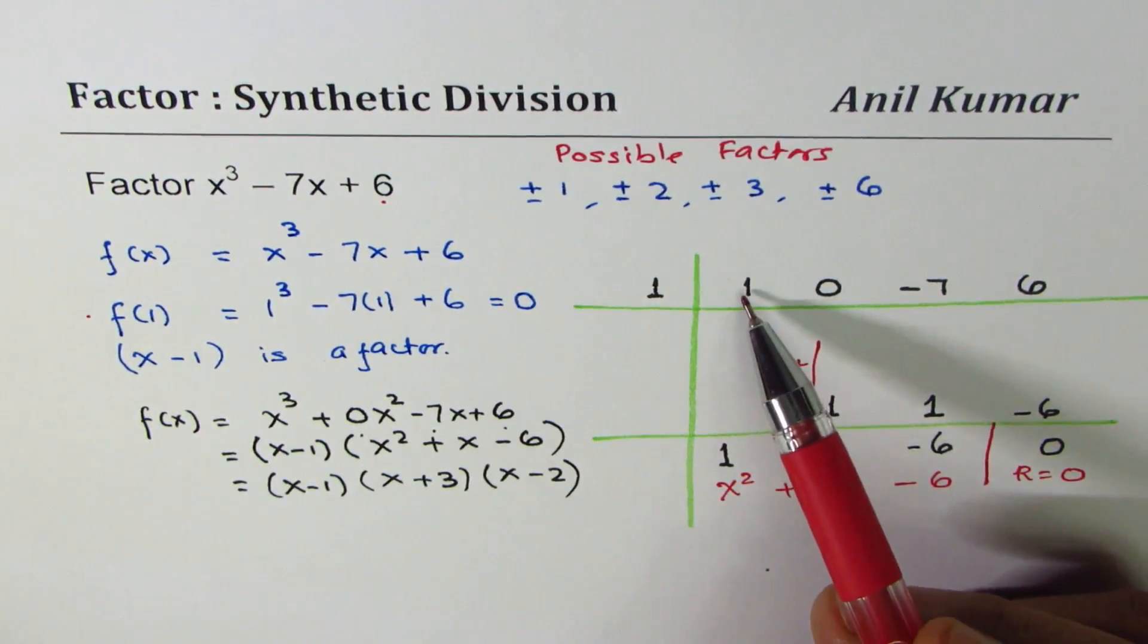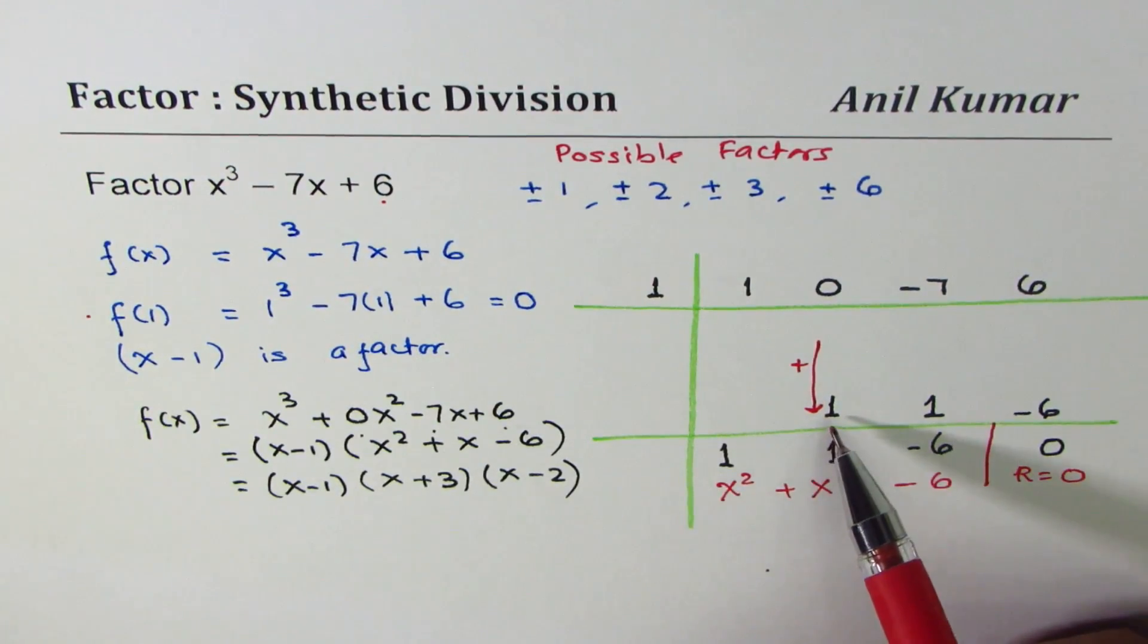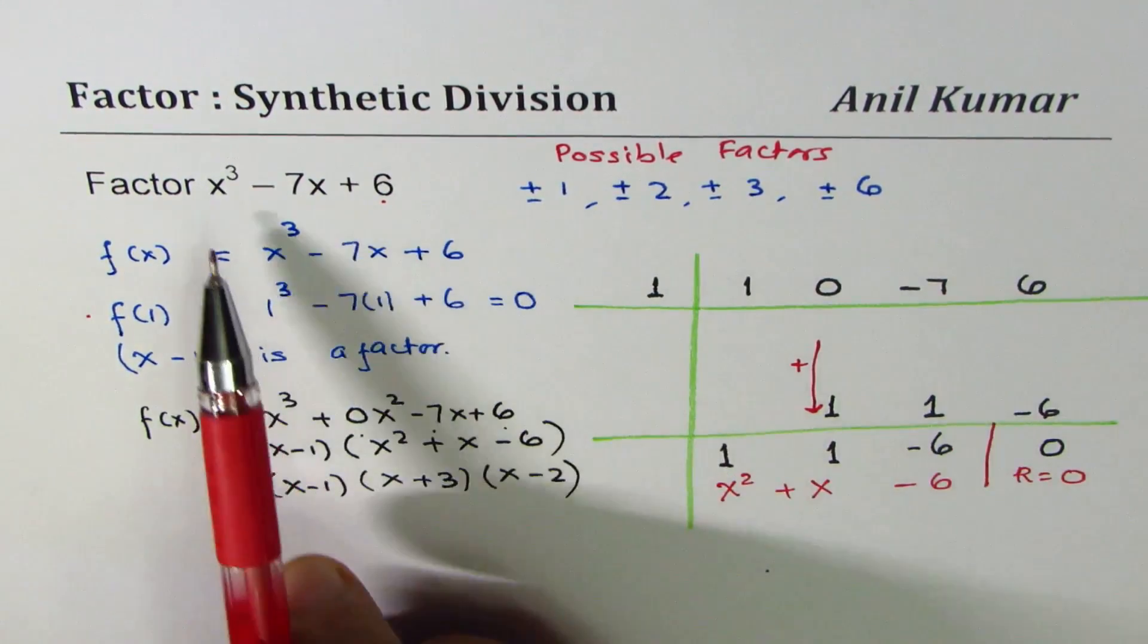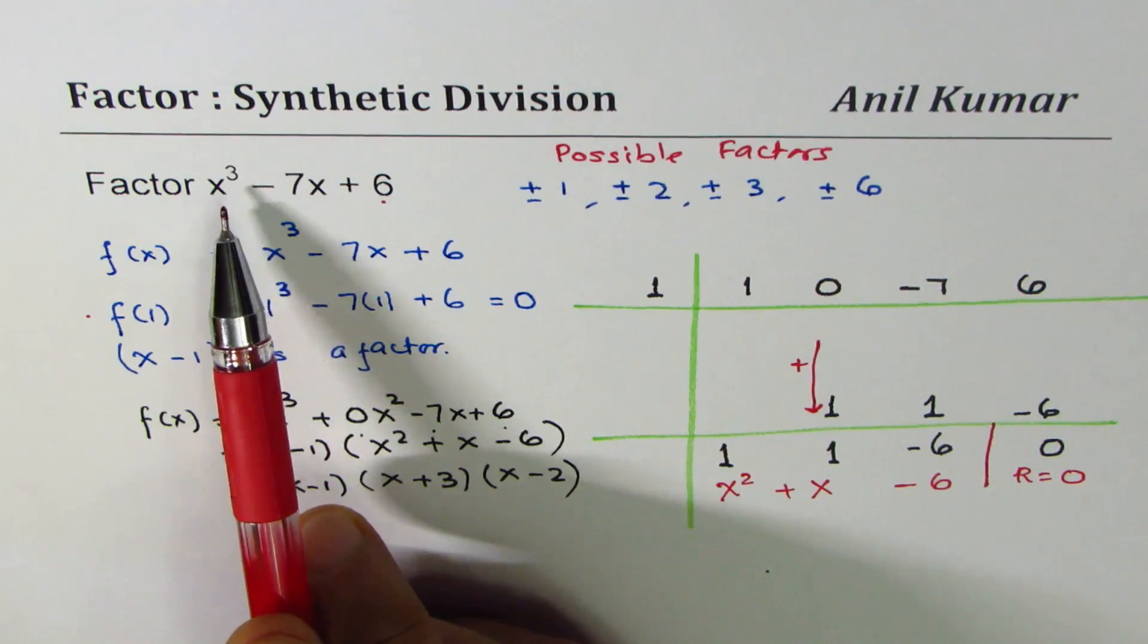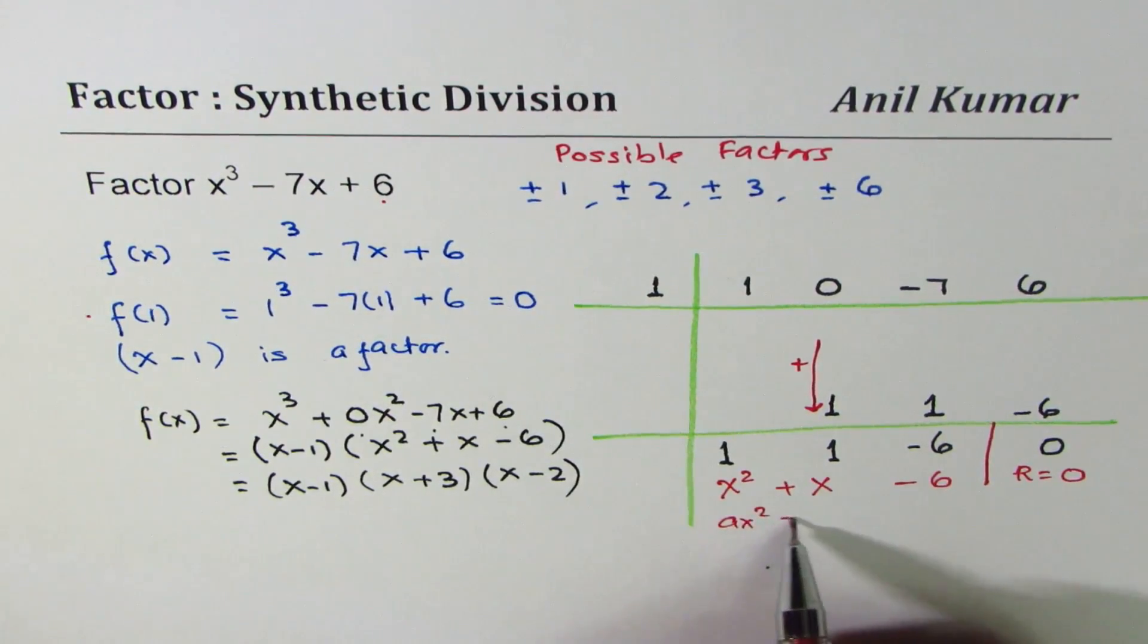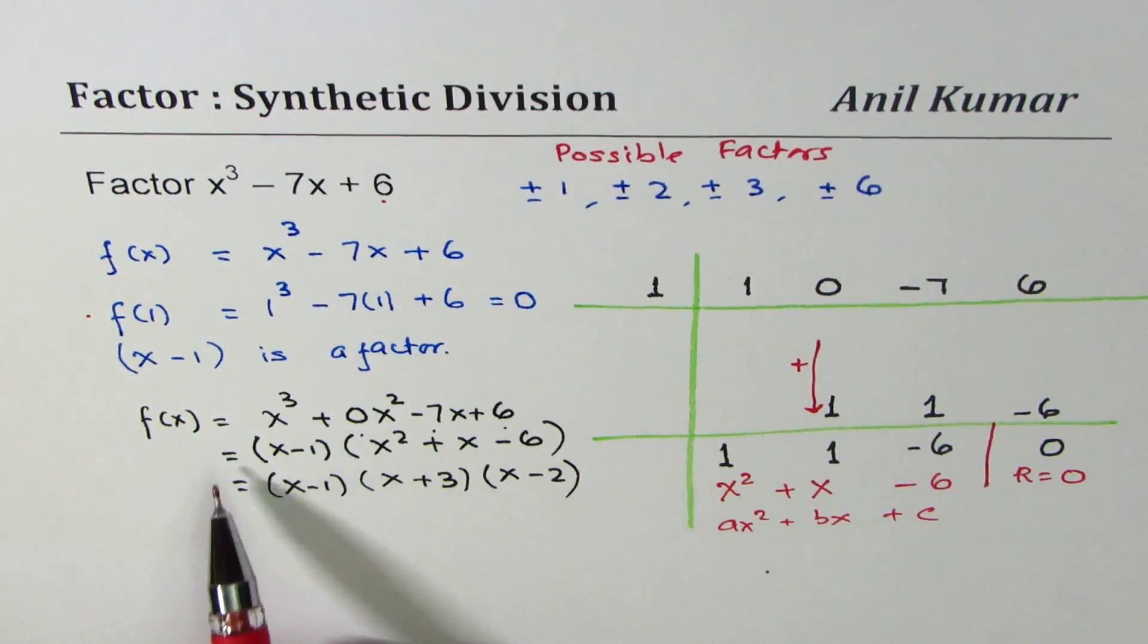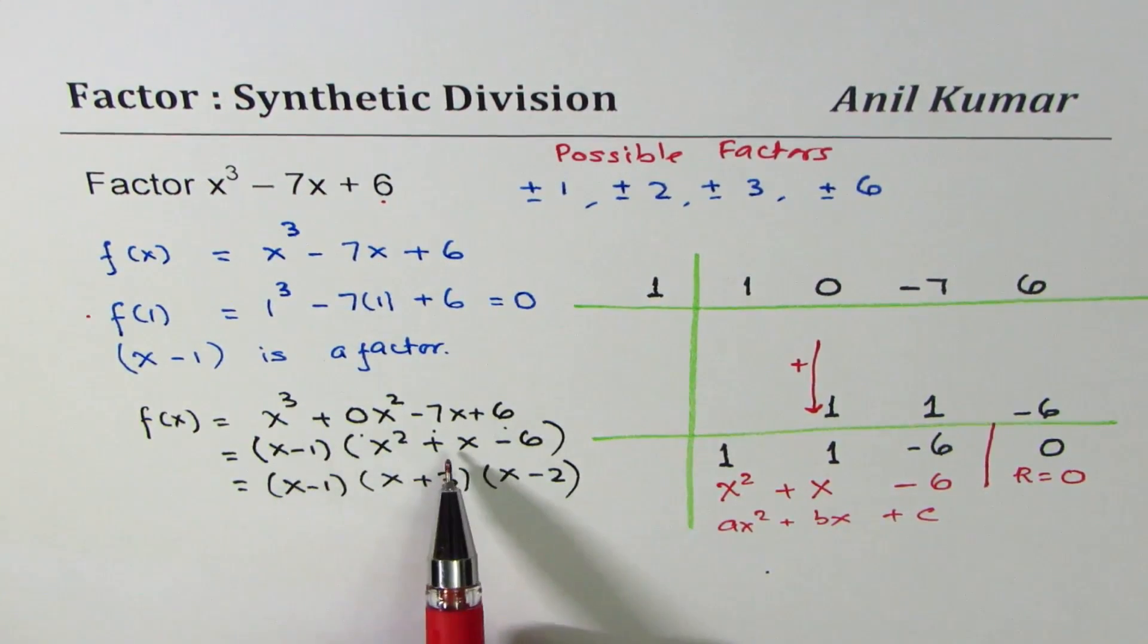In synthetic division, you carry forward the leading coefficient. Multiply and place it above the line. Add and proceed forward. You expect a quadratic function when you divide cubic by a linear function. So write coefficients with the standard quadratic function, which is ax² + bx + c. You know the coefficients and the constant. So you can rewrite your equation with partial factoring and then factor it further to get your answer. I hope that's absolutely clear.